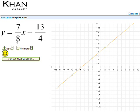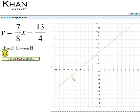The equation of this line is 7 eighths x plus 13 over 4. Let's see if what I said about the slope is right. If we move, if we run 8, we should rise 7. So let's see. Run 8. 1, 2, 3, 4, 5, 6, 7, 8. So that gets us right there. And then we should rise 7.